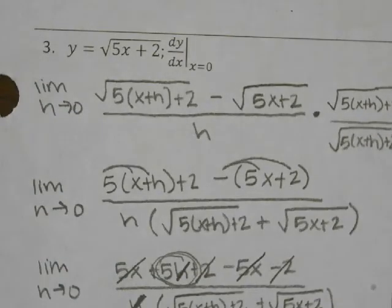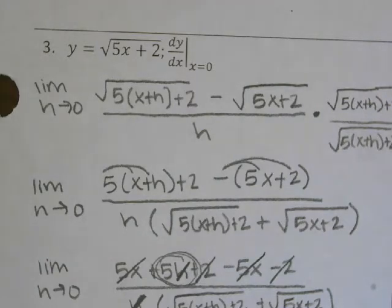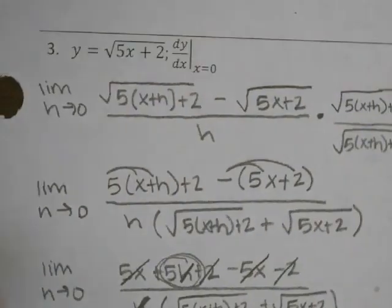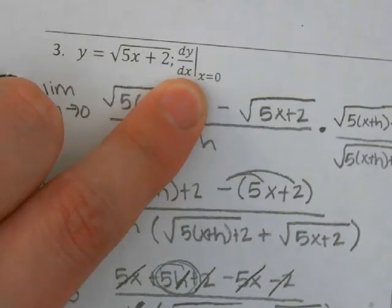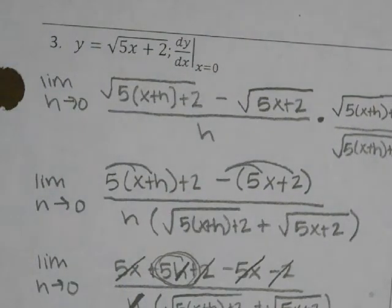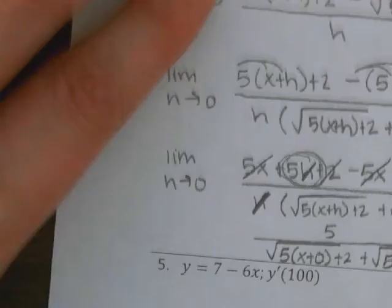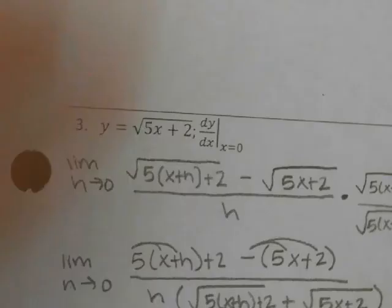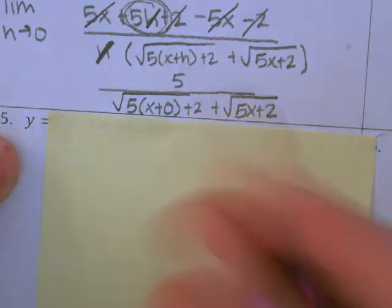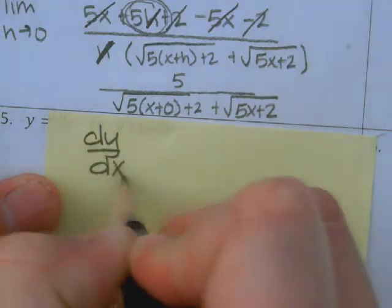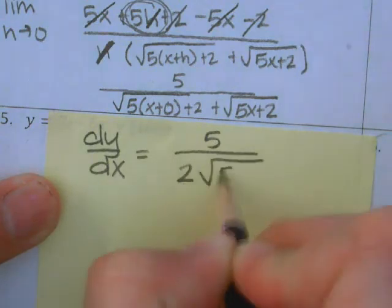Now do you guys remember — I think it was the video from yesterday — I said the different types of notation for derivatives. There was y prime, there was dy/dx, there was f prime of x, and there was one with a dot above y that I've never seen. I can see from the original problem they used the dy/dx notation, so I'm going to match that notation. So if the original problem was y equals the square root of 5x+2, then my derivative equation is dy/dx equals 5 over 2 square roots of 5x+2.